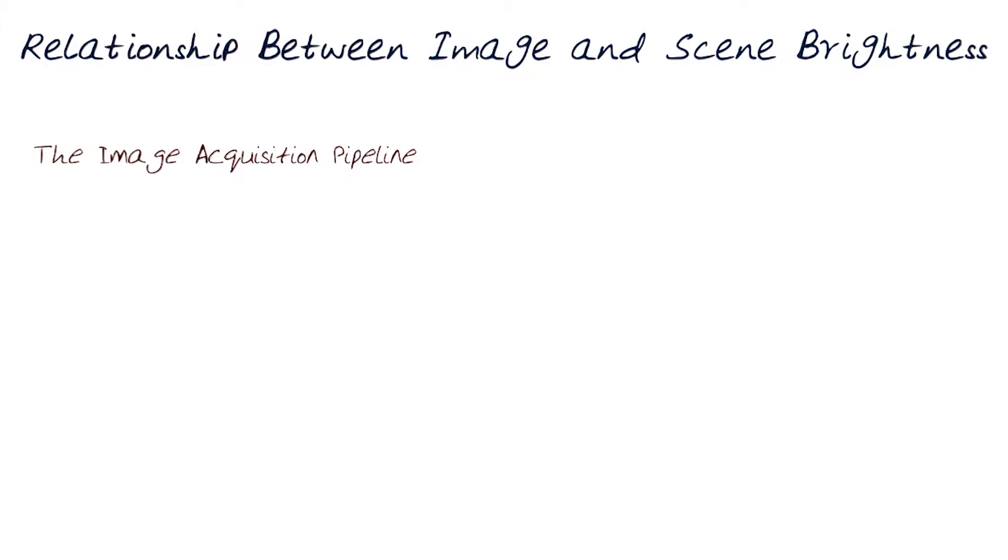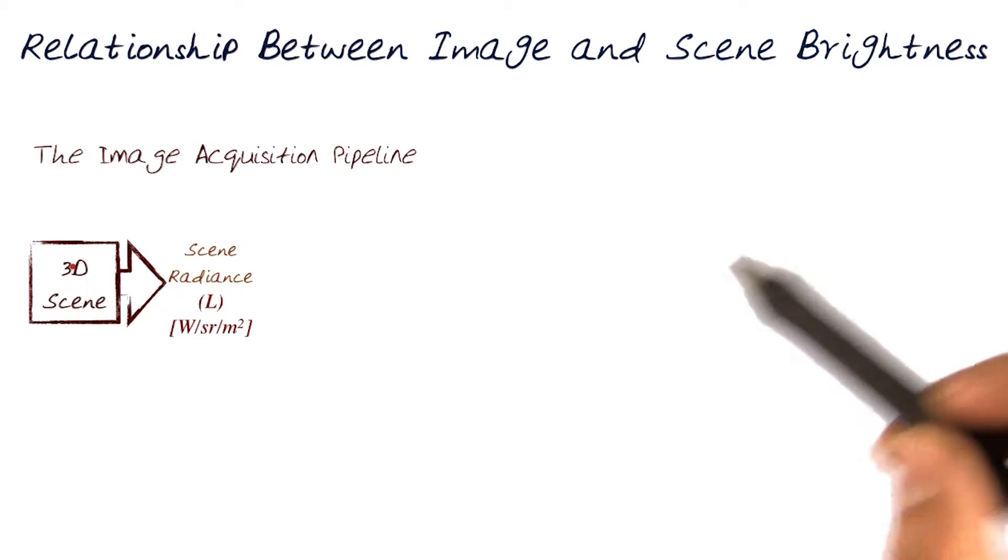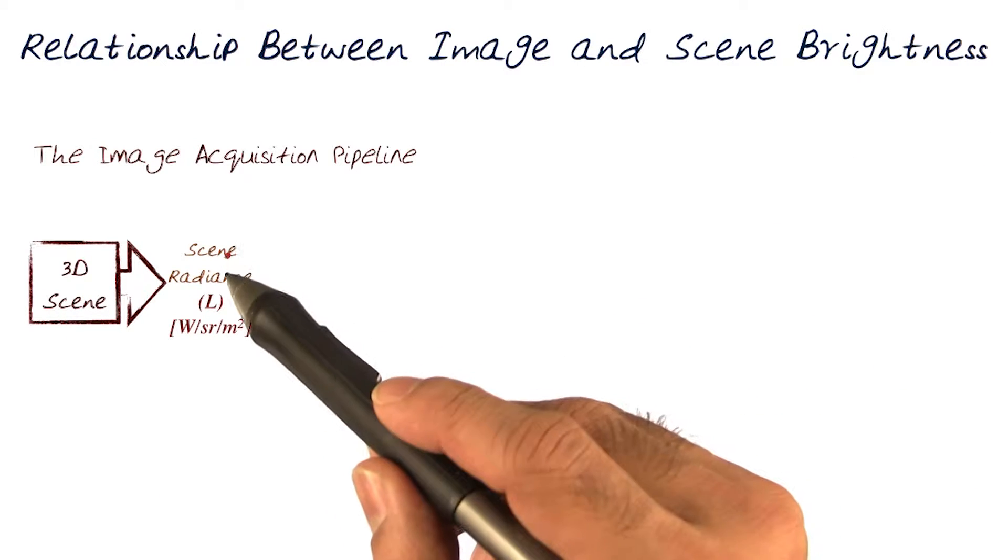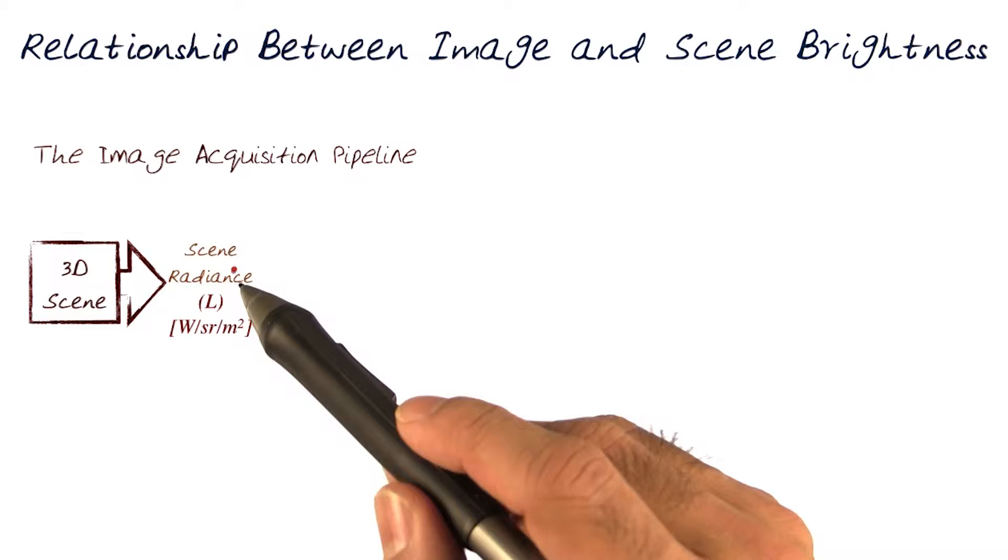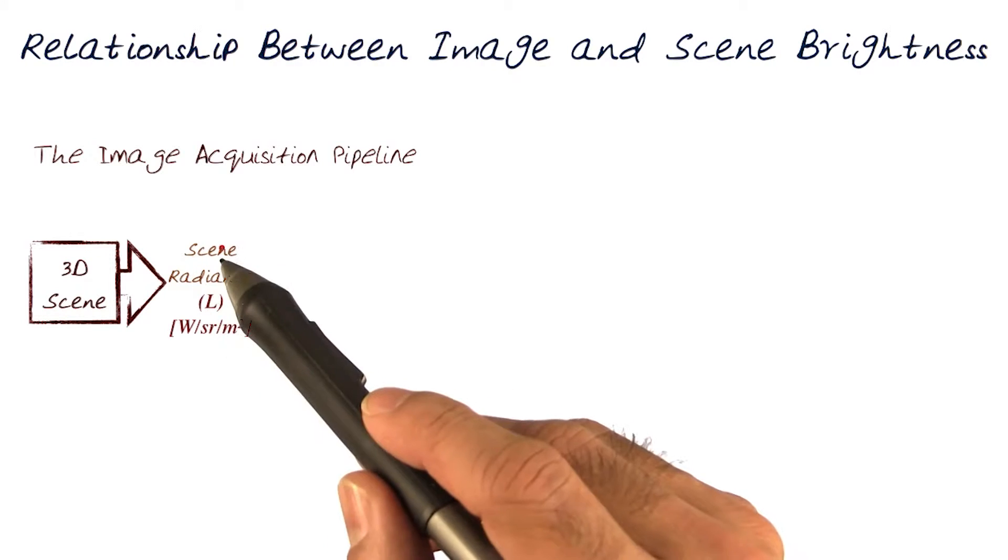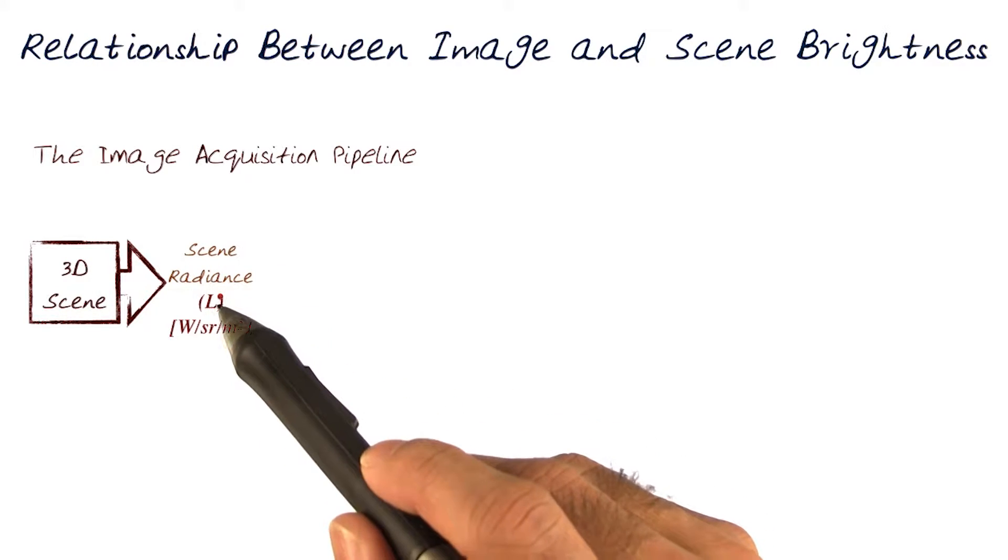Now let's look at the image acquisition pipeline. This is something we've discussed differently when we talked about cameras, but now let's talk about it in detail in this context. We start off with a 3D scene. This scene is being captured, and the capturing information is called the scene radiance, referred to as L.